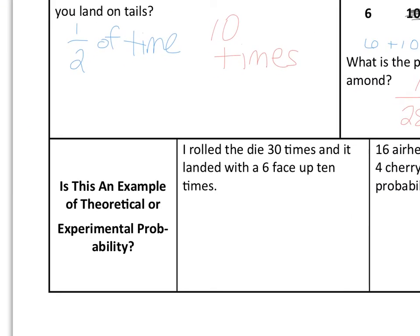Now here are two examples. We want to know: is it theoretical probability (what should happen) or experimental probability (what did happen)? The first one says I rolled the die thirty times and it landed with a six face-up ten of those times. This is experimental probability — we rolled that die thirty times and got six face-up ten times. That's exactly what happened.